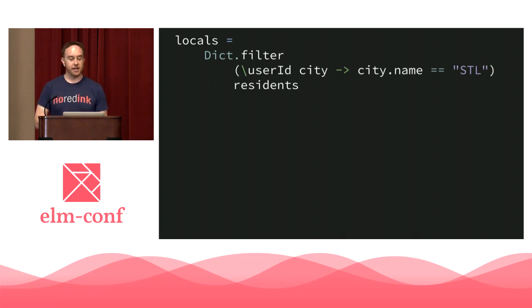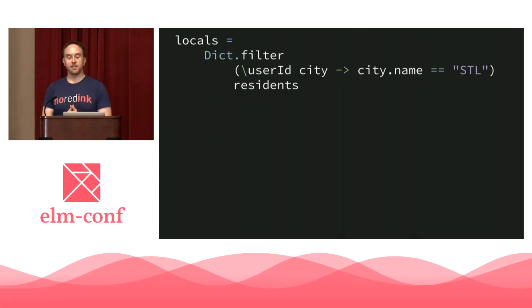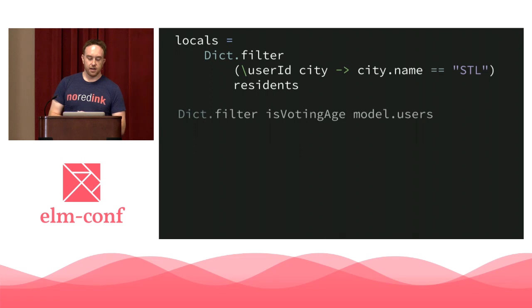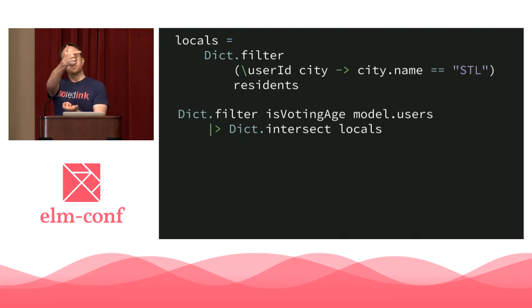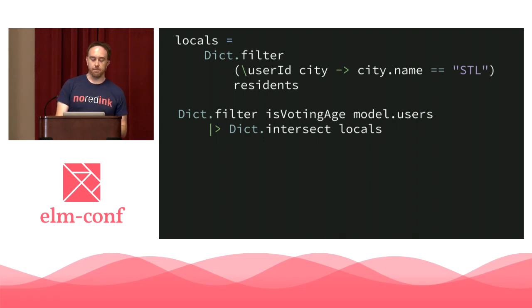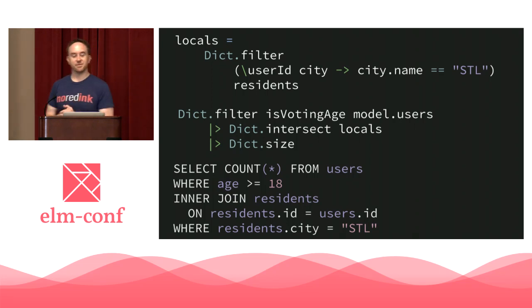To implement that join query in Elm: first filter residence for city.name == 'STL' to get locals. Then filter model.users with isVotingAge. Then use Dict.intersect locals to combine them — giving voting-age St. Louis residents. Finally pipe to Dict.size. With just a few simple expressions, we can do the same types of queries as a relational database, all with a single source of truth and no nested record updates.